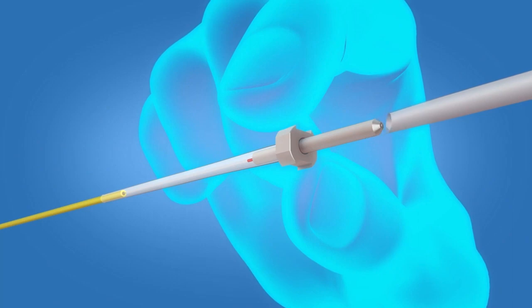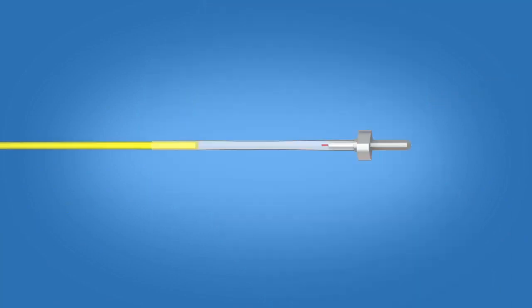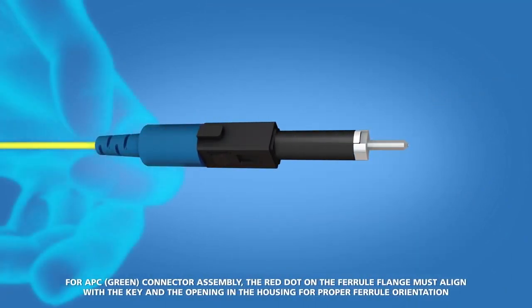Hold the base of the ferrule unit and remove the transfer tubing. Slide the boot assembly up to the ferrule, keeping a light tension on the fiber at the back of the boot.